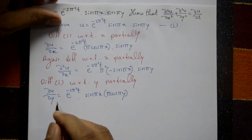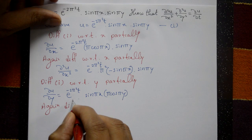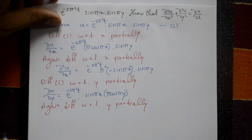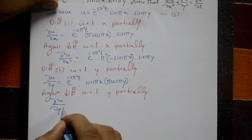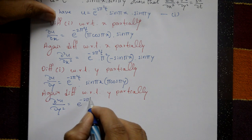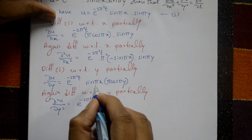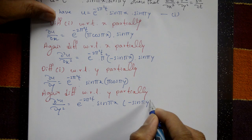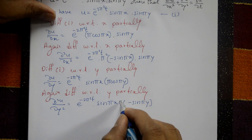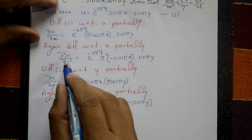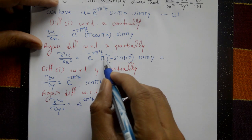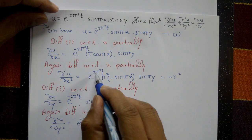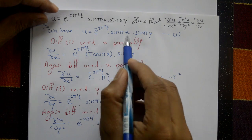Again differentiate with respect to y partially to get ∂²u/∂y²: the constant e^(-2π²t) and sin(πx) remain, differentiate cos(πy) to get minus sin(πy), multiplied by π again giving π². So ∂²u/∂x² = minus π² · e^(-2π²t) · sin(πx) · sin(πy) = minus π²u.